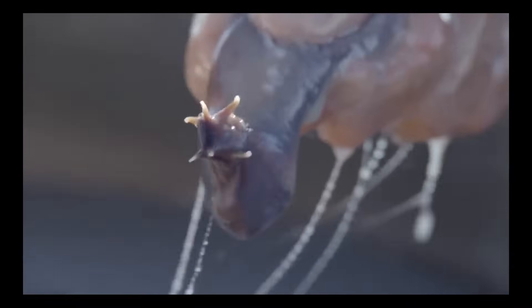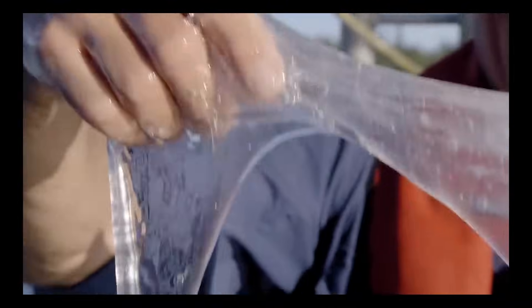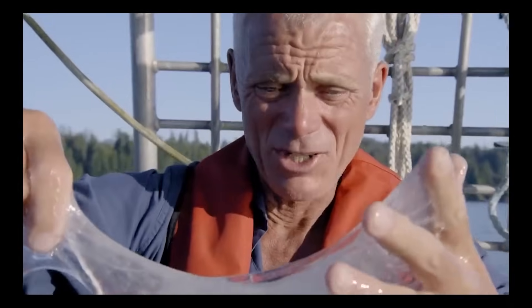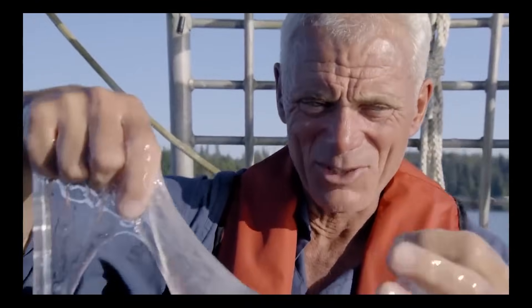This slime that hagfish produce, what the hagfish is actually doing, it's secreting filaments of protein with little mucus globules strung out along them. And when this mucus hits the water, it just bulks up incredibly.